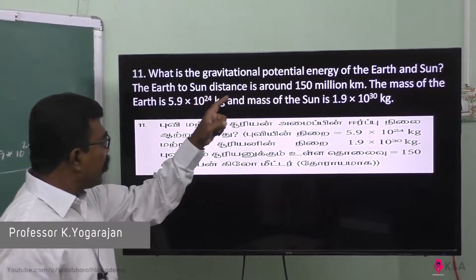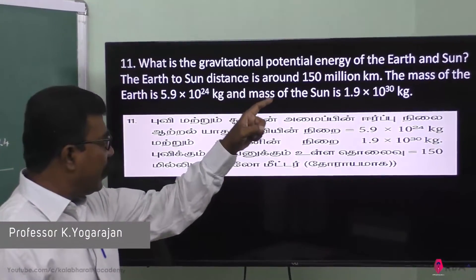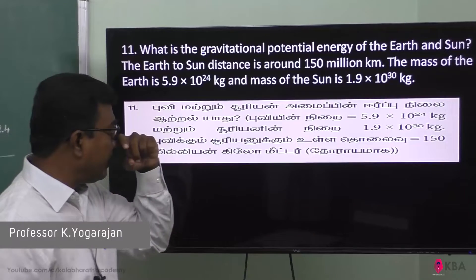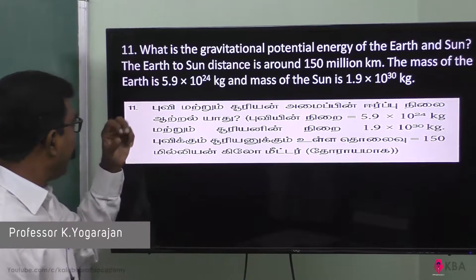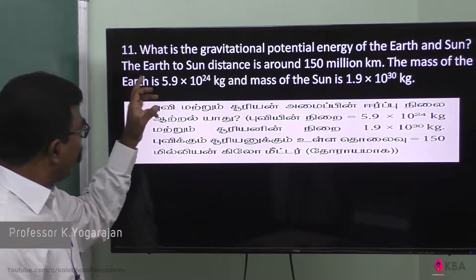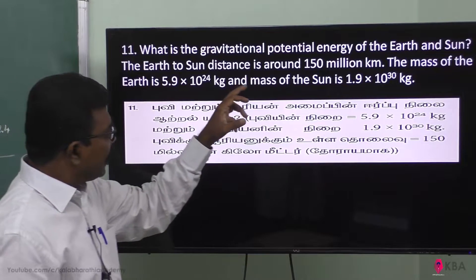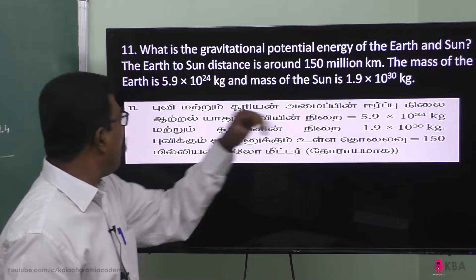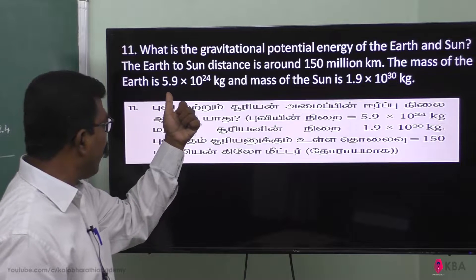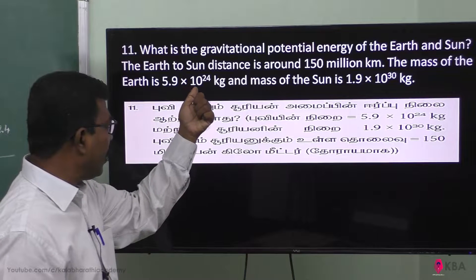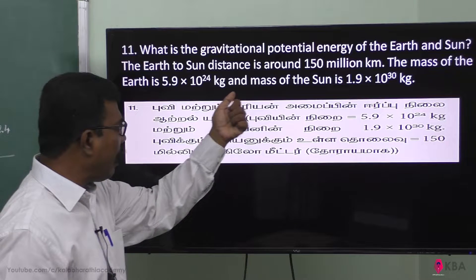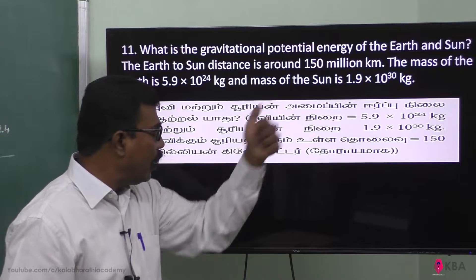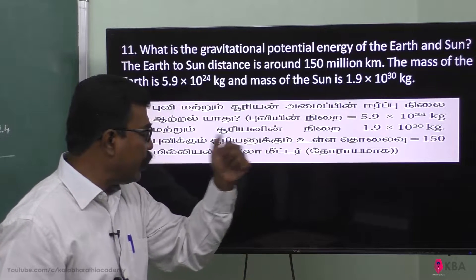What is the gravitational potential energy of the Earth and the Sun? The Earth-to-Sun distance is around 150 million kilometers. The mass of the Earth is 5.9 × 10²⁴ kg and the mass of the Sun is 1.9 × 10³⁰ kg.